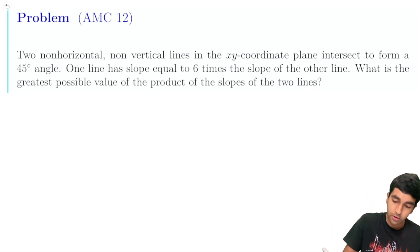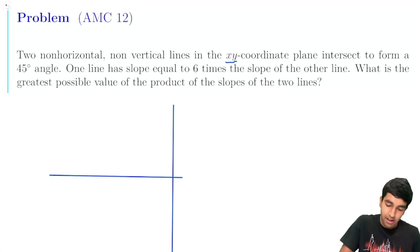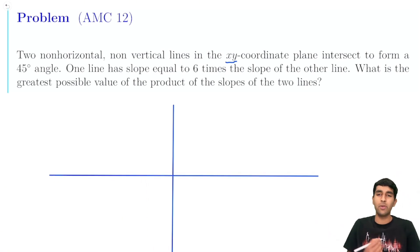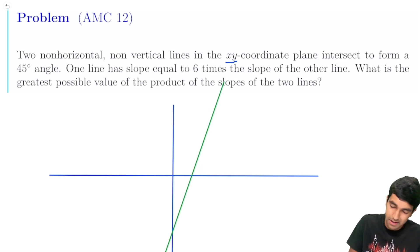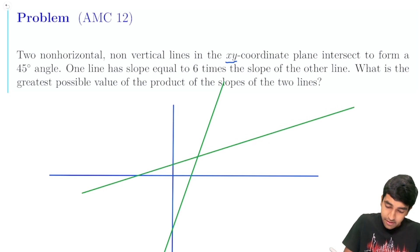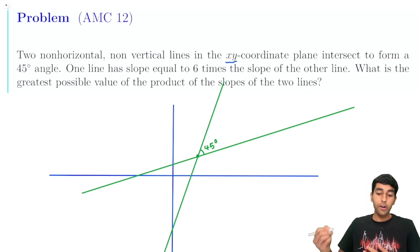Two non-horizontal, non-vertical lines in the x-y coordinate plane. Let's draw our x-y, our y-axis, our x-axis. And it's just two lines. We don't really know much about these lines, but let's just draw something like this. And they intersect, we form a 45-degree angle. One line has a slope six times the other slope line. What is the greatest possible value of the product of the slope?